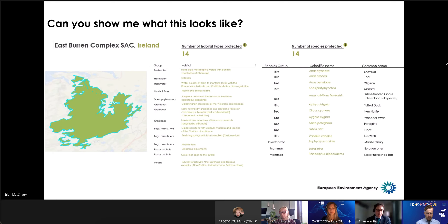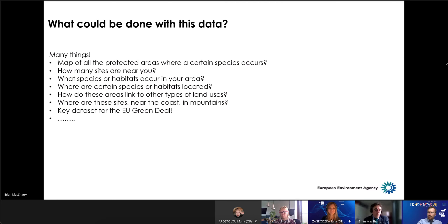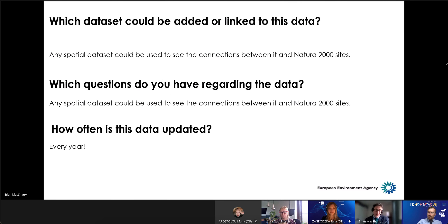You can look at a site and figure out how many habitats and species are protected. Interestingly, the same list of habitats and species is used across all 27 different countries, so you could do cross-European analysis. You could map all protected areas that have certain species in them, check how many sites occur near you, determine what species and habitats are in those sites, and see whether certain species or habitats are located in specific regions — near the coast, in mountains. You can also examine what kind of land use is happening within and outside these sites. Any spatial dataset could be linked to this one, allowing you to bring in different layers and do your analysis.